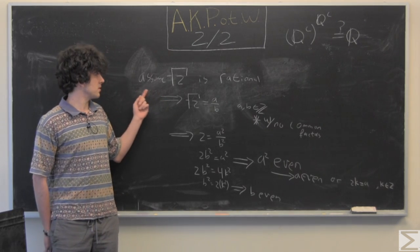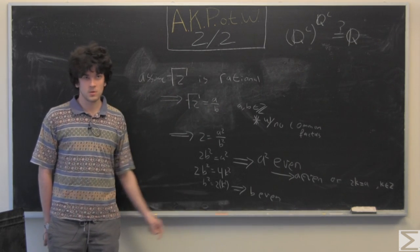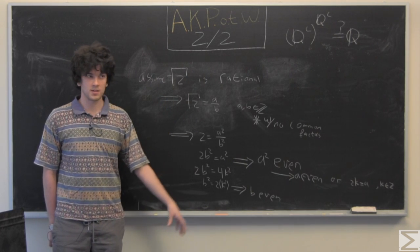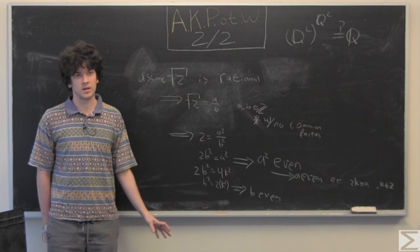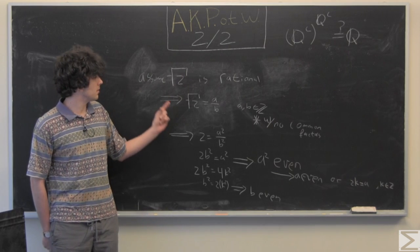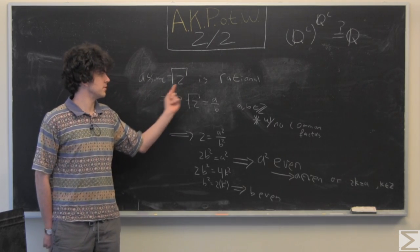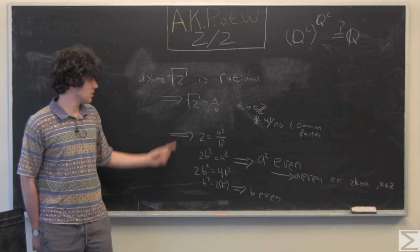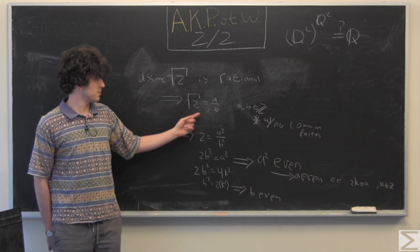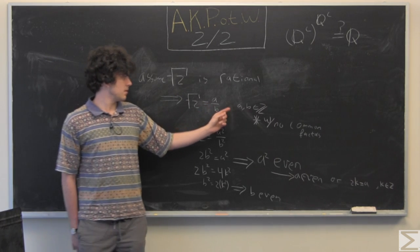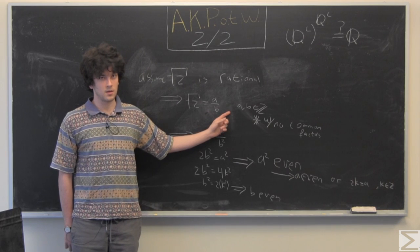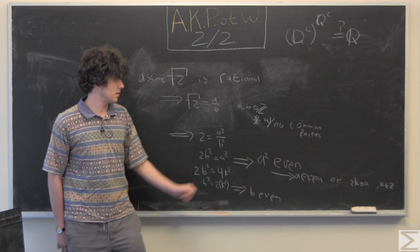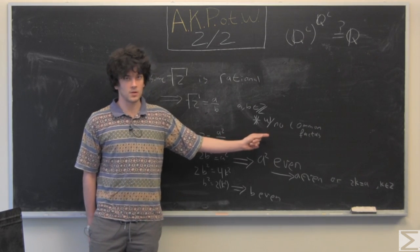So first we're going to assume the square root of two is rational, and try to find a contradiction in our logic, which would prove that square root of two is indeed irrational. So rational, a rational number is a and b, a divided by b, where a and b are integers, such that a and b have no common factors.